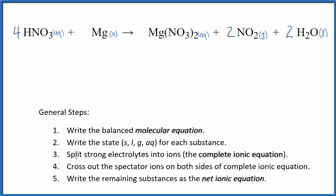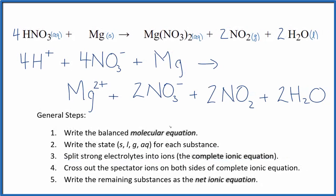Once we have the states, we can split the strong electrolytes into ions for the complete ionic equation. That looks like this. So this is the complete ionic equation.